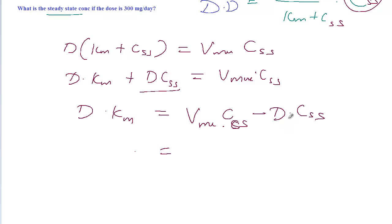What we're going to do is take a common concentration at steady state. That is CSS times Vmax minus D equals dose times Km.